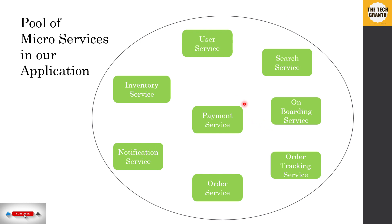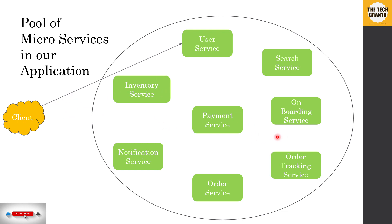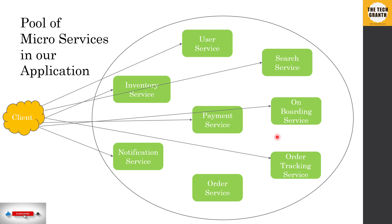If a client has to make a call to one of these services — say, the user service — it will call user service directly to get or modify user details. Similarly, for any other work, the client has to make a call to each of these services individually, resulting in multiple calls from the client to each service. Beyond looking messy, the biggest drawback is that the client is tightly coupled with each of these services.